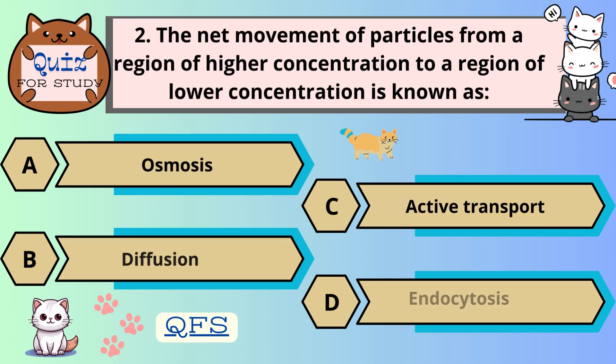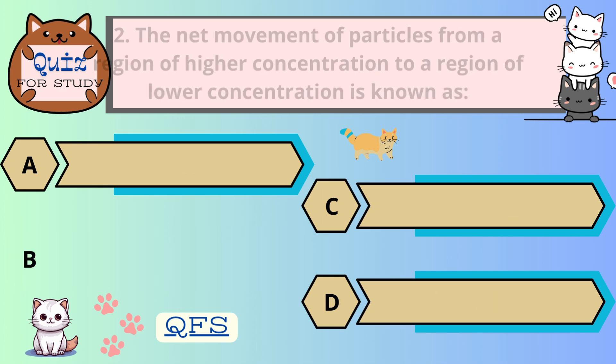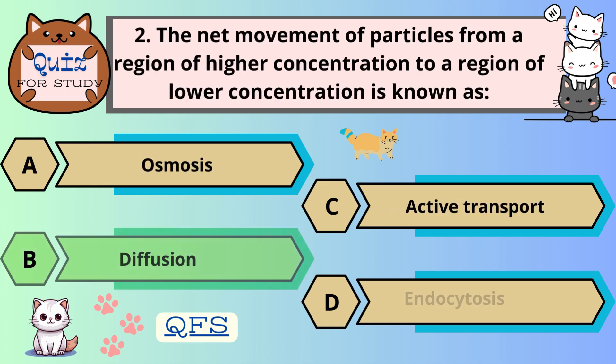Number 2. The net movement of particles from a region of higher concentration to a region of lower concentration is known as — the correct answer is B. Diffusion.